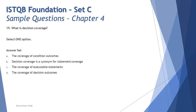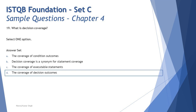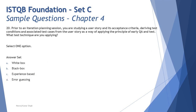Option D says 'the coverage of decision outcomes' — yes, that's clear. Decision coverage deals with decision outcomes. Putting it all together, the right answer here is D: the coverage of decision outcomes is the definition of decision coverage. Let's jump into the next question, question number 20.